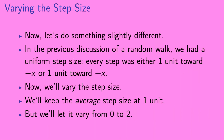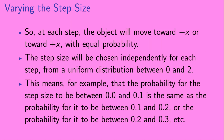Now let's do something slightly different. In the previous discussion of a random walk, we had a uniform step size — every step was either one unit toward minus x or one unit toward plus x. Now, we'll vary the step size. We'll keep the average step size at one unit, but we'll let it vary from 0 to 2. At each step, the object will move toward minus x or toward plus x with equal probability. The step size will be chosen independently for each step from a uniform distribution between 0 and 2. This means the probability for the step size to be between 0.0 and 0.1 is the same as for it to be between 0.1 and 0.2, or 0.2 and 0.3, etc.